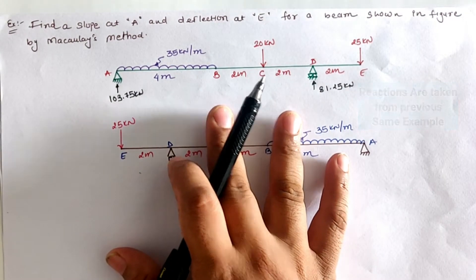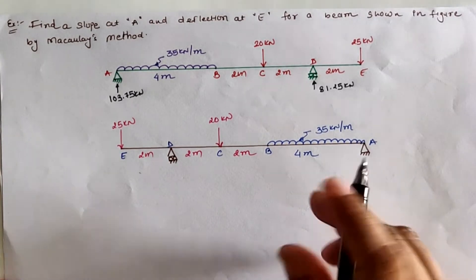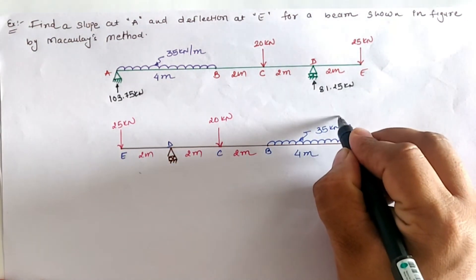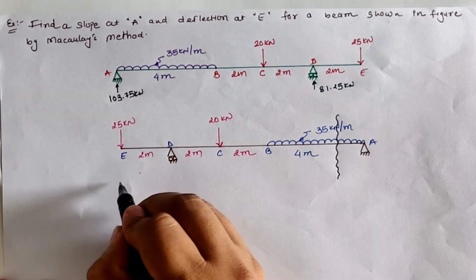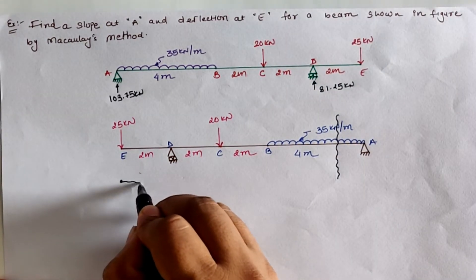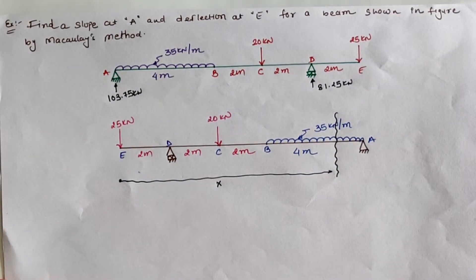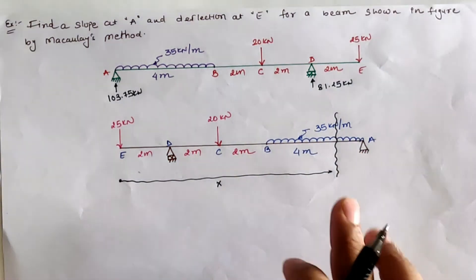According to the method, we have to apply the section in the last span, which is between A and B as per the figure. If we apply a section between A to B, taking E as the origin and distance as x meters, then all criteria for this section are satisfied — as it is in the last span and it also cuts the UDL.